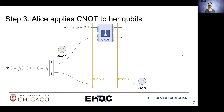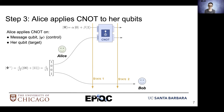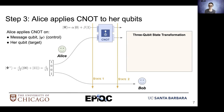In the next step for teleportation, Alice will apply CNOT to both of her qubits. Her CNOT operation will have the message qubit as the control and her qubit — which is one half of the entangled pair — as the target.